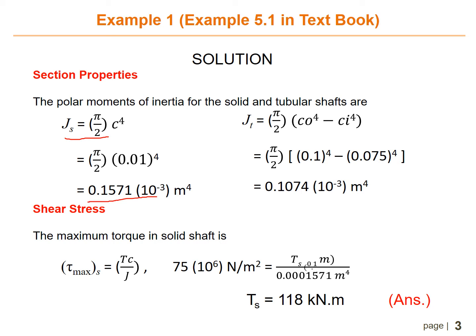For the polar moment of inertia of the tubular shaft, we use the formula J equals pi over 2 times (co to the power of 4 minus ci to the power of 4), which is pi over 2 times (0.1 to the power of 4 minus 0.075 to the power of 4). This gives a polar moment of inertia for the tubular shaft of 0.1074 times 10 to the power of negative 3 meters to the power of 4.